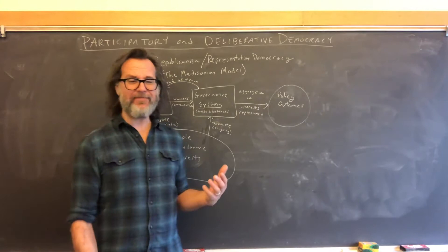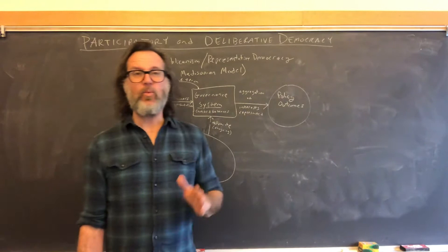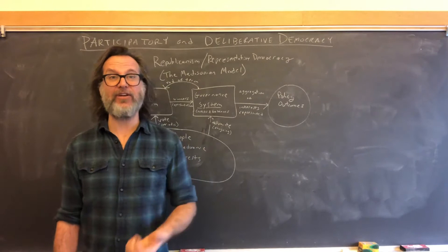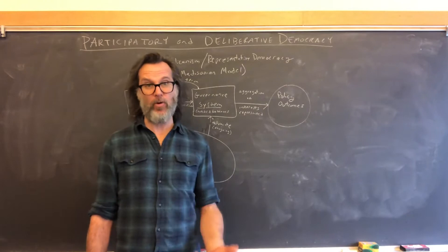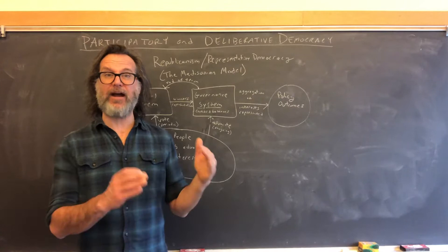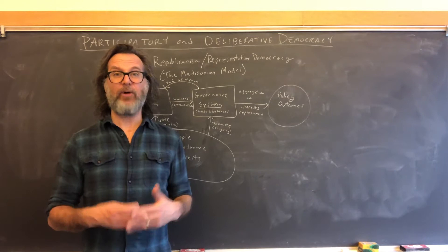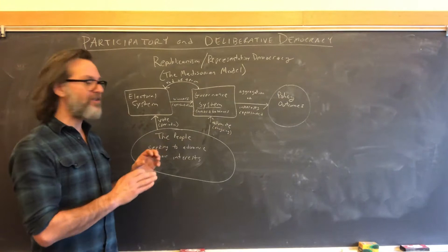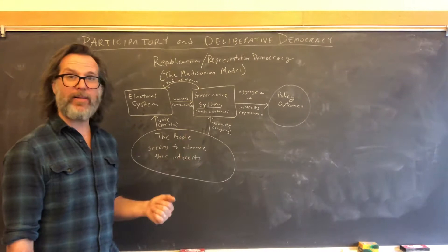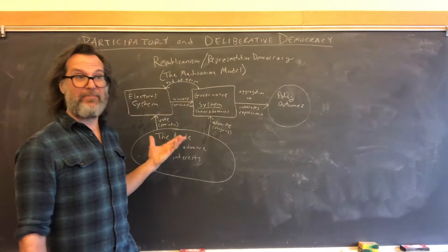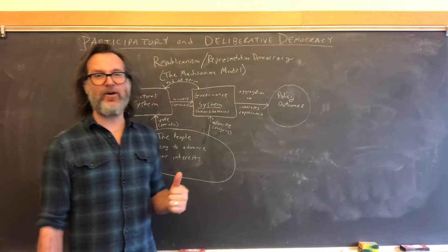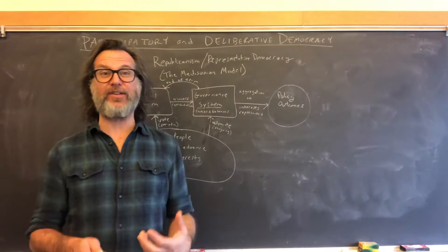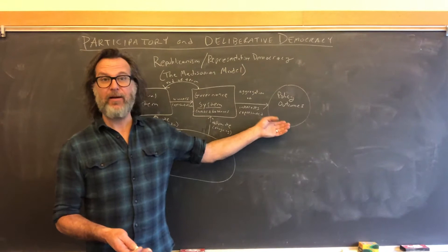Despite the fact that this is a very thin nexus between the people and the government, we tend to think of the ballot as the primary democratic mechanism. We have a very ballot-centric view of democracy. The ballot is extremely important, but because it's periodic and sporadic, and comes with a narrow range of questions and options, it is not an extraordinarily potent connection between the people and the democratic system. Even in the Madisonian model, the people also have the opportunity to advocate in the governance system, though far fewer people advocate than vote.